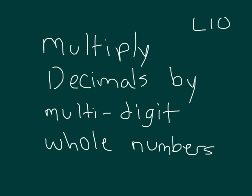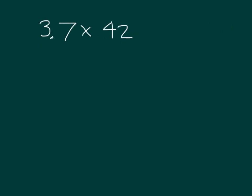Within this lesson, we'll work with multiplying decimals by multi-digit whole numbers. For this first problem, we'll look at 3.7 multiplied by 42. An estimate for this product would be 4 times 40, which is approximately 160. That's our estimate.